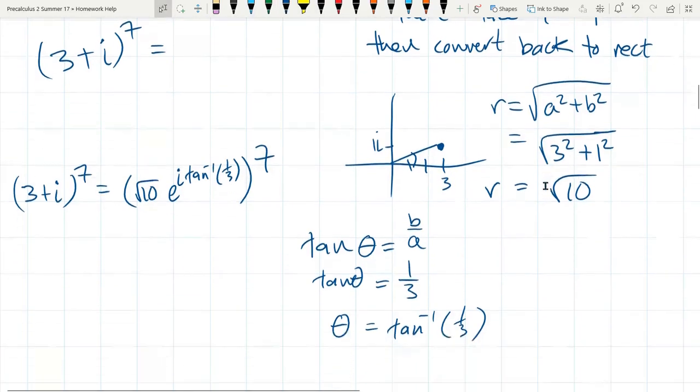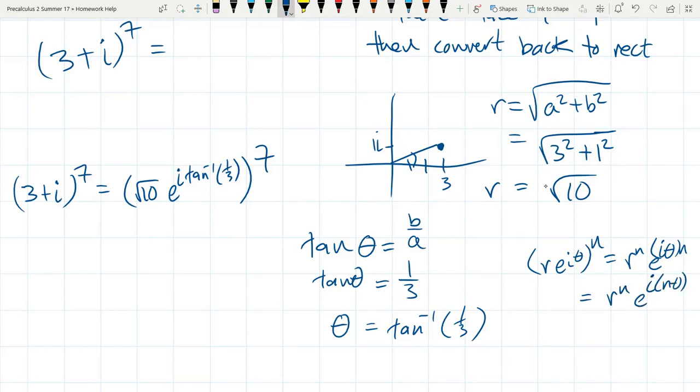Now how do powers work? r e to the i theta raised to the nth power is r to the n e to the i theta times n. And you can write that as e to the i n theta, like that. That's an n times theta, not an n minus theta. Let me write that a little more clear. It still looks like an n minus theta, but it's n times theta.